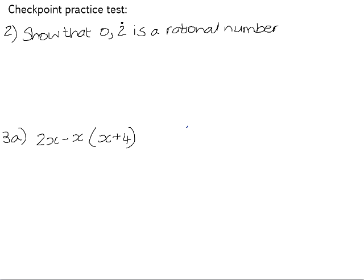Let's take a look at some of the questions from the checkpoint practice test. Question 2, show that 0.2 recurring is a rational number.